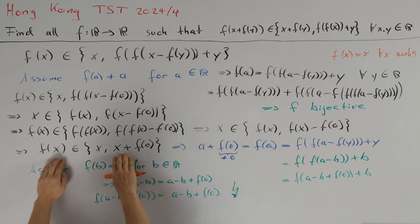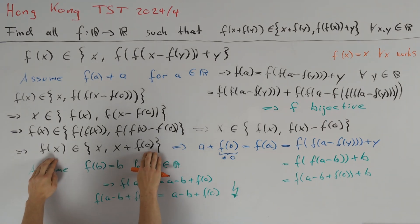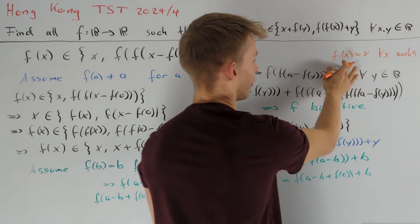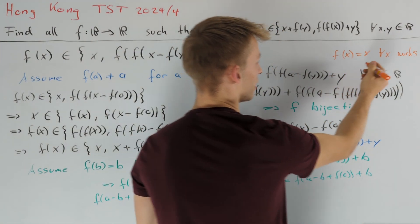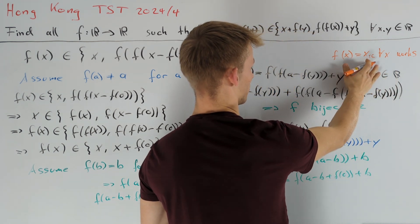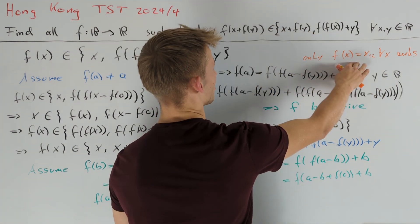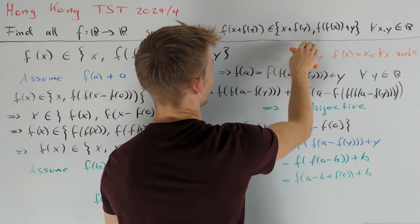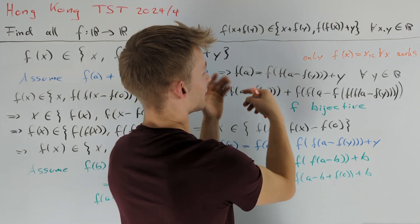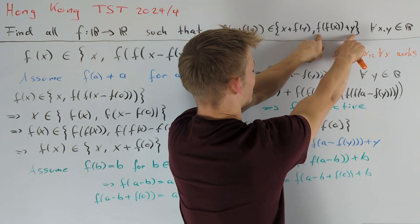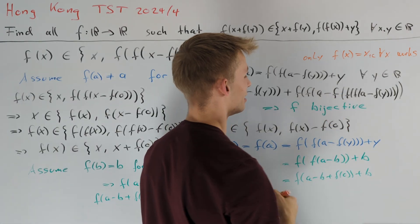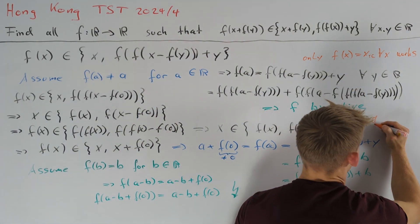We conclude we are always in the second case, so the only possible solutions are f(x) = x + c for some constant c. Plugging this back into the original equation, the left-hand side always equals the second term, so all these solutions work and we are done.